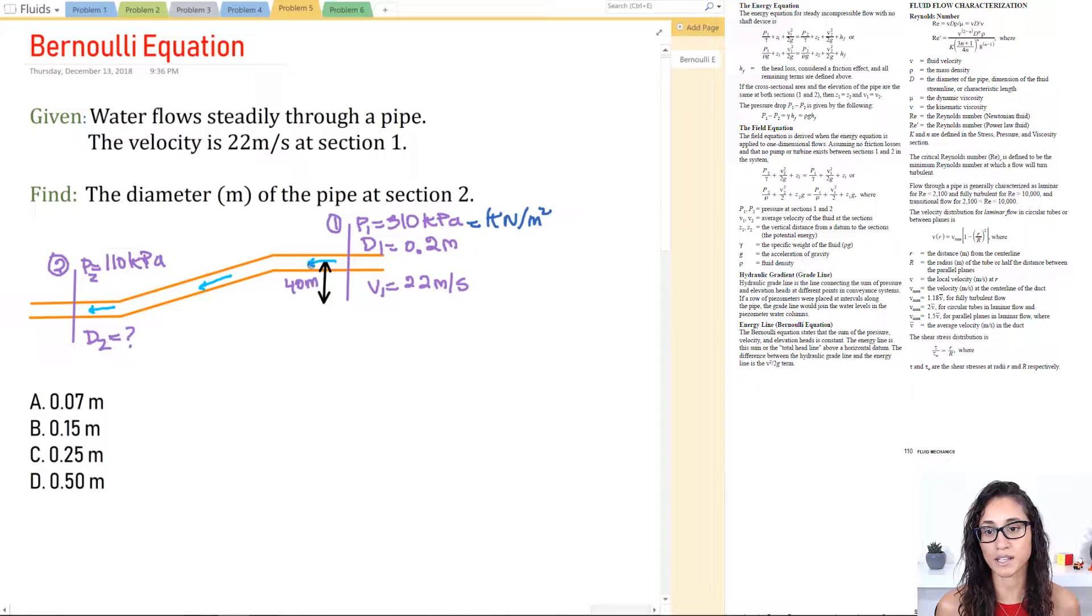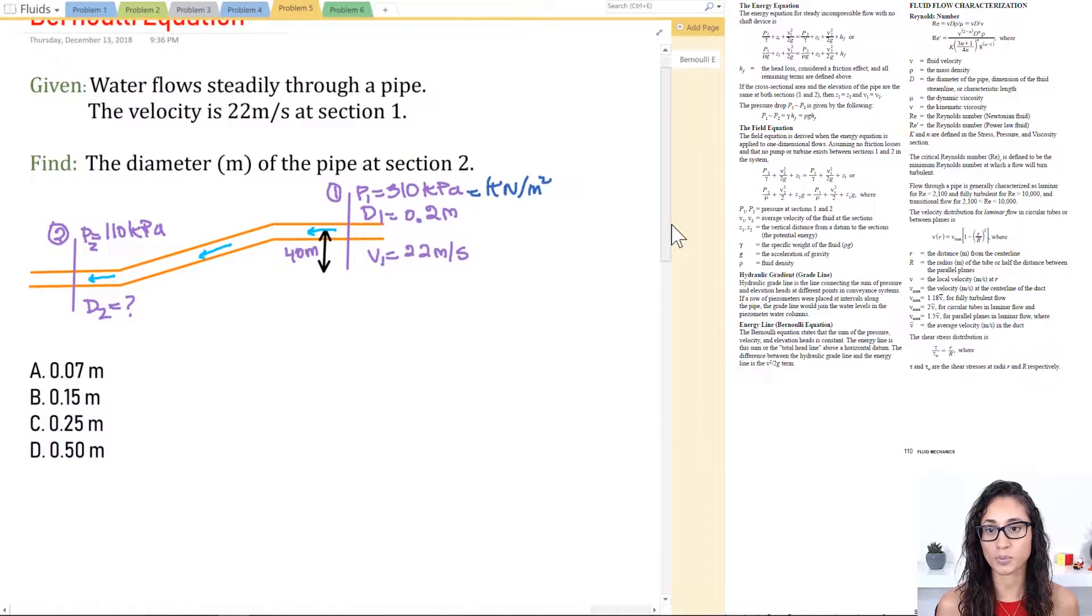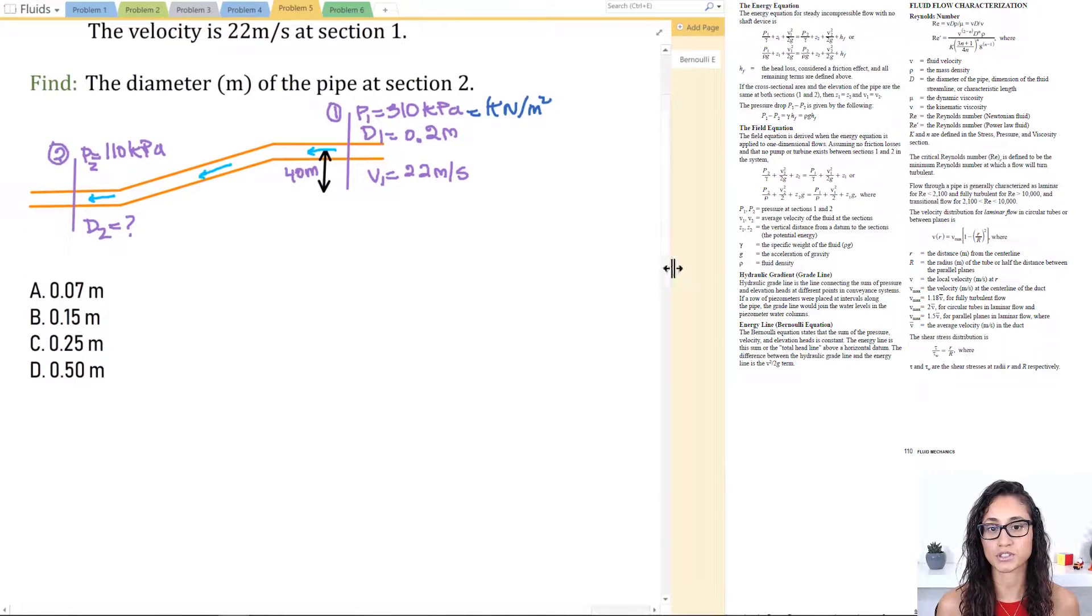We were given the height from this point to this point is 40 meters and the pressure at this section is 110 kilopascal and we need to calculate the diameter at this section. It's very easy, straightforward type of question. All we need to do here is use two equations, Bernoulli and the continuity equation.